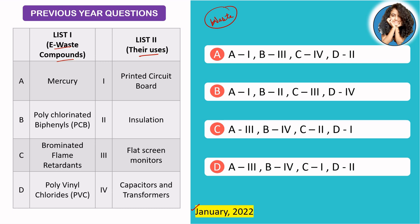First, if we talk about mercury, you can get it in flat screen monitors. Next is PCB — polychlorinated biphenyls — because PCBs are very good insulators and they don't produce much heat, so they are used in capacitors and transformers. After that, printed circuit boards are used in computer devices. And polyvinyl chloride (PVC) is used for insulation.